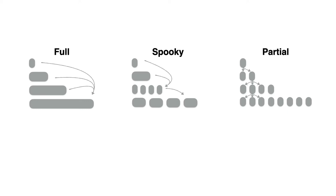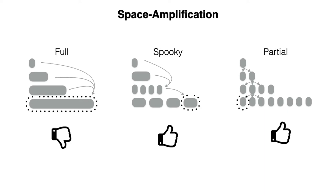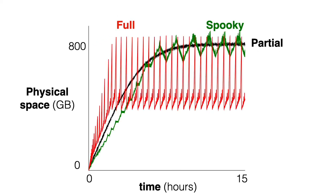So now let us compare Spooky to full and partial merge. With respect to space amplification, Spooky drastically improves on full merge because it performs smaller compactions at the largest level. Indeed, in the following experiment, Spooky exhibits far less space fluctuations than with full merge. This allows it to store double as much data as with full merge and to match partial merge in terms of storage capacity.